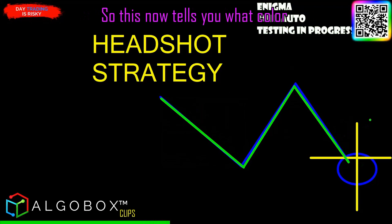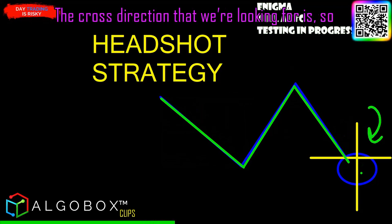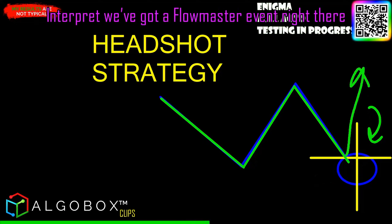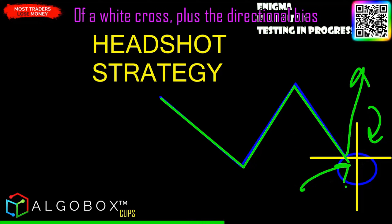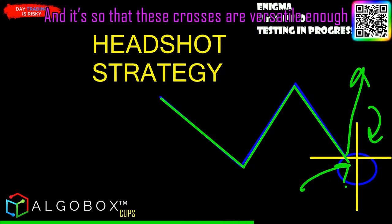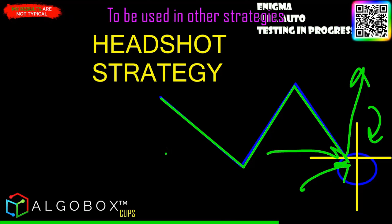So this now tells you what color the cross direction that we're looking for is. If it's green, then a headshot would interpret — we've got a flow master event right there of a white cross plus the directional bias coming from the dot itself. That's a headshot strategy, and these crosses are versatile enough to be used in other strategies.